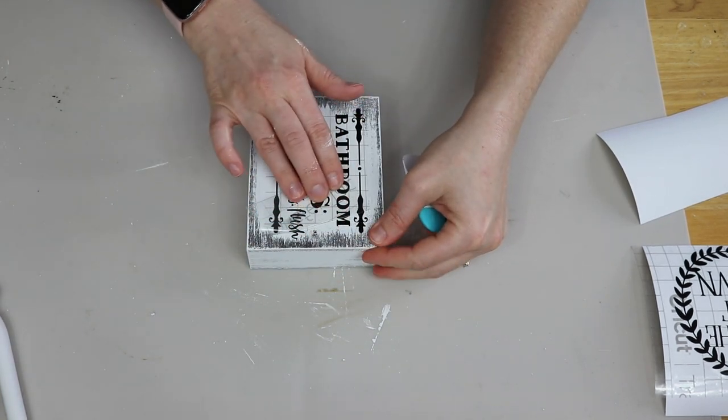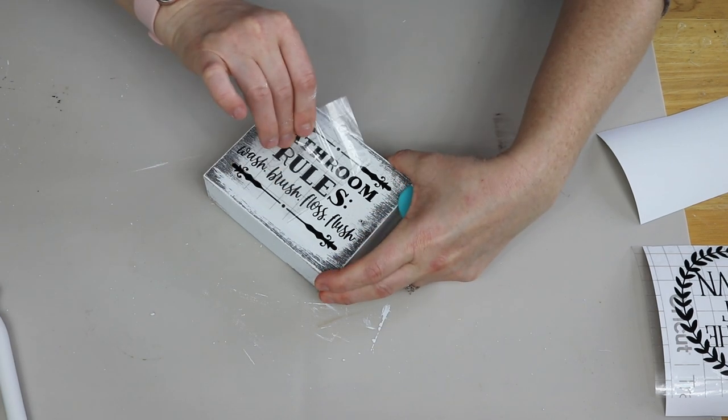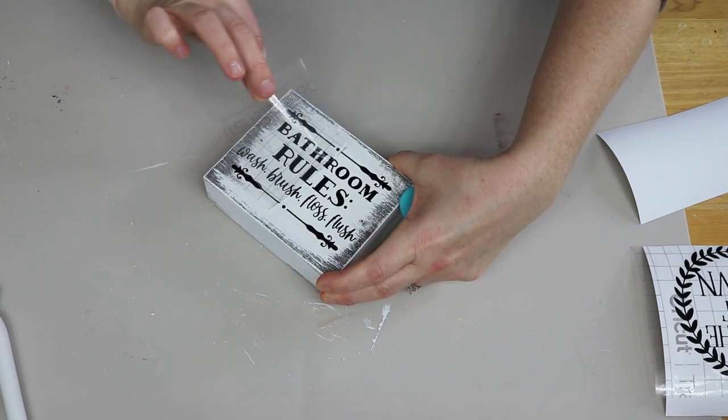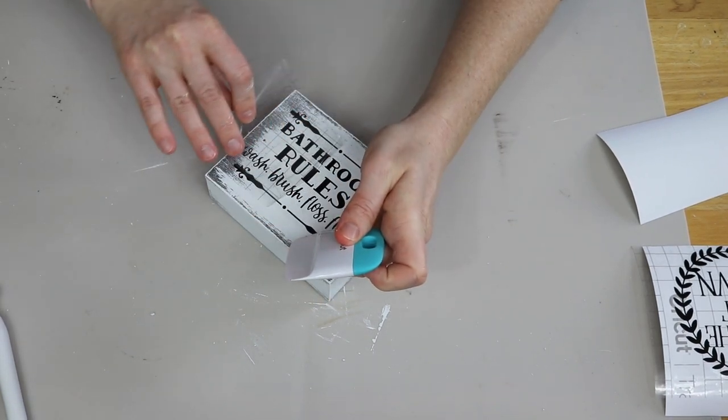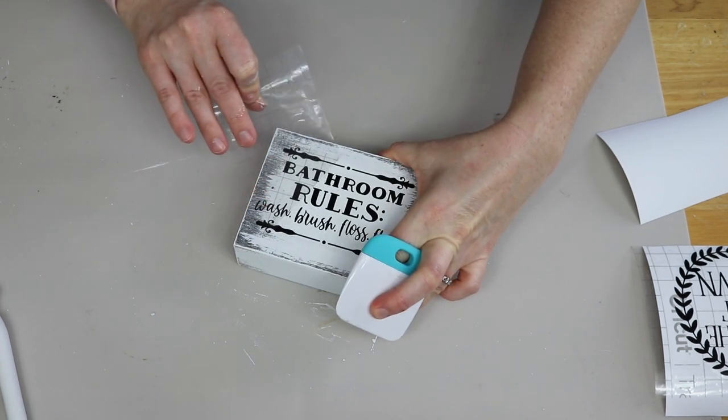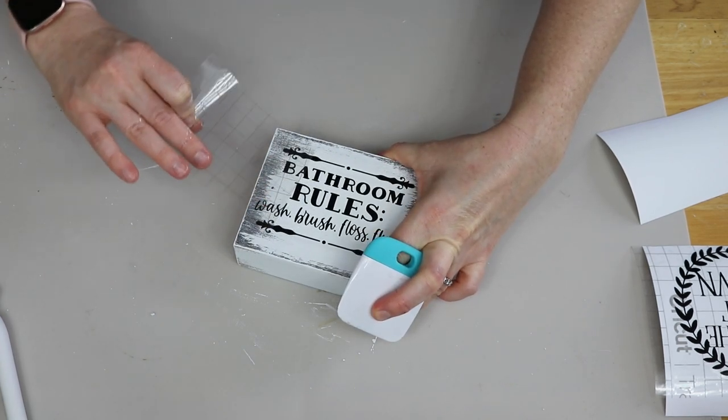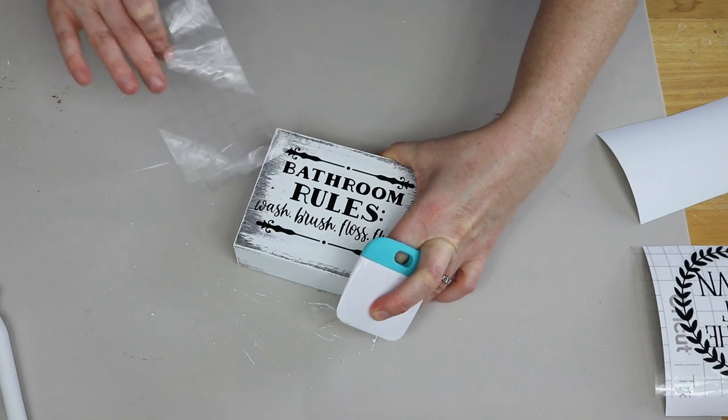Once it is good and I'm happy with the placement, not crooked or anything like that, using my scraping tool again just to adhere the vinyl to the box and to the little project I'm working on and then I'm just going to pull off that transfer tape at a 45 degree angle rocking it back and forth nice and slow just to make sure that I don't pull off parts of the vinyl as I'm pulling off the transfer tape.